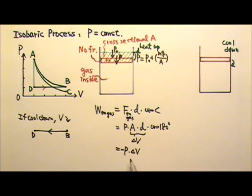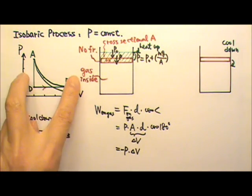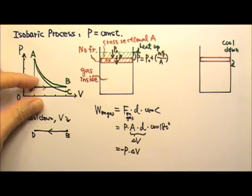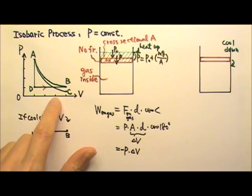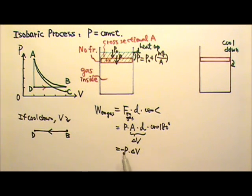Since we're multiplying, that's height times the base. Pressure times the ΔV, height times the base of this rectangle right here. So the work done on the gas is the negative area of the P-V diagram.